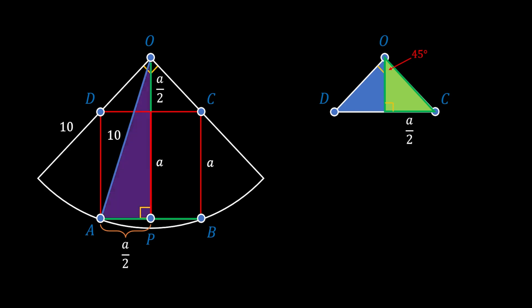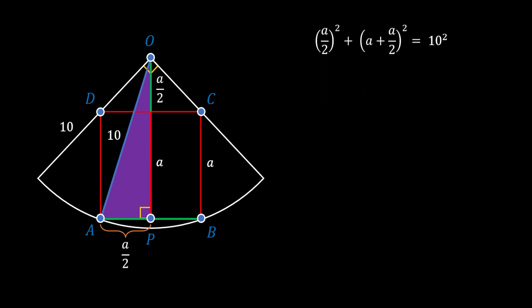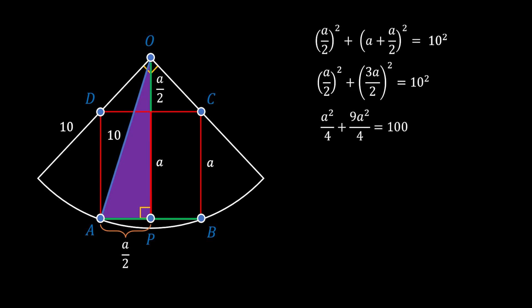Let's set our attention to this purple right triangle and use the Pythagorean theorem. Leg AP squared plus leg PO squared must equal hypotenuse OA squared. Substituting values, we get (A/2)² plus (A + A/2)² equals 10². Simplifying the second term and squaring, we can add the two terms on the left side to get 10A²/4 equals 100. Multiplying through by 4 gives us A² equals 40.